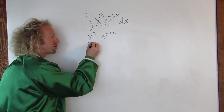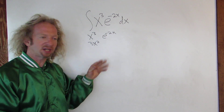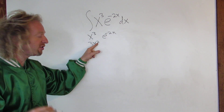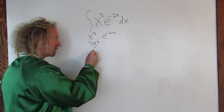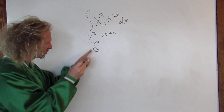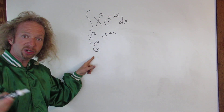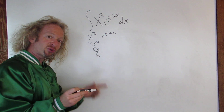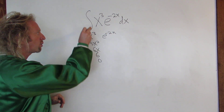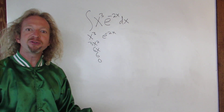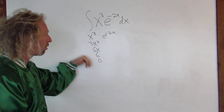So the derivative of x cubed is 3x squared, because you bring down the 3 and subtract 1. Then you do it again: 2 times 3 is 6, so you get 6x. Then take the derivative again and you get 6. Take the derivative again and you get 0. And you stop here because it's 0. So you differentiate all the way to 0, always.